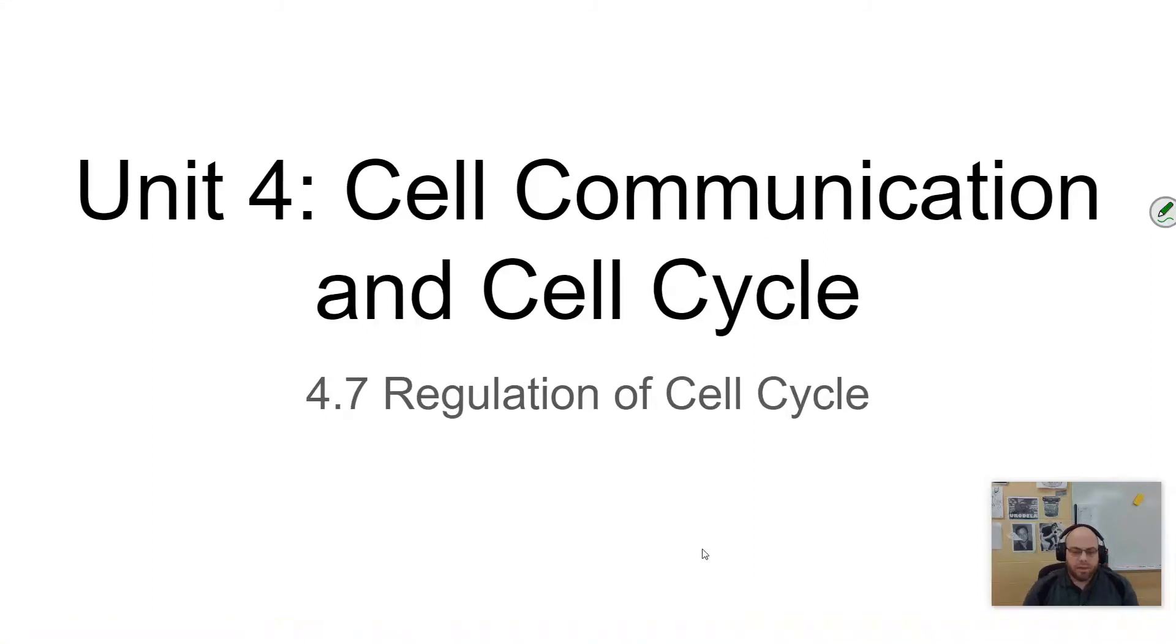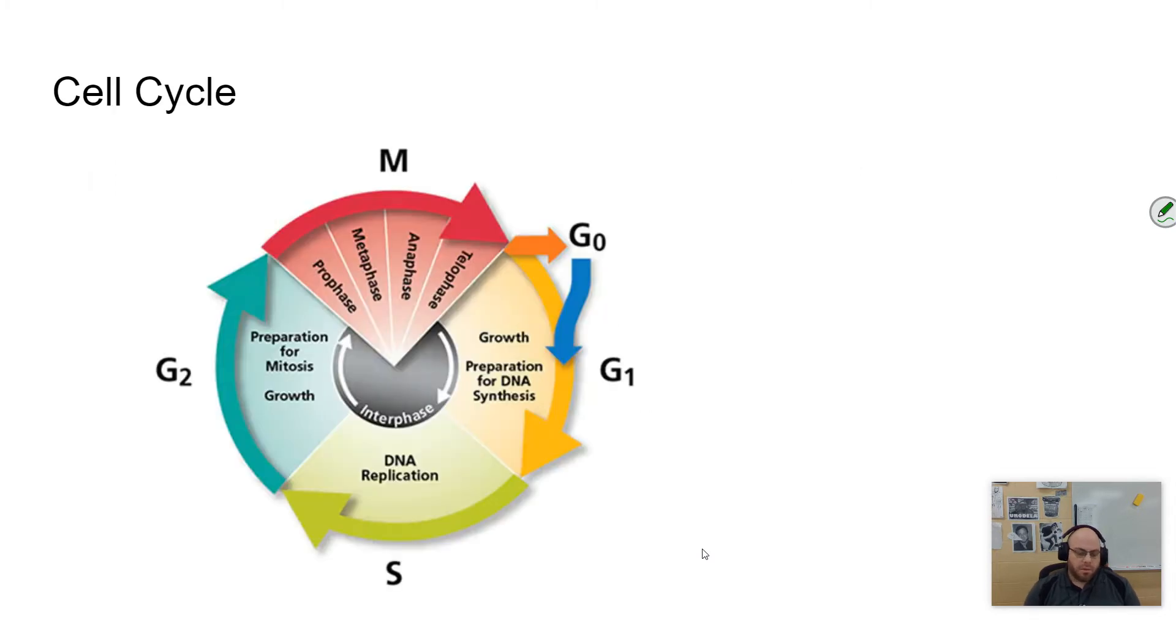In this video, we'll be looking at the regulation of the cell cycle, things that control the cell cycle to keep cells from dividing whenever they feel like it. Here's a nice picture of the cell cycle again. Remember, the cell cycle is just the normal life cycle of a cell. It ends in division where you have two identical daughter cells. It's made up of those phases you see: interphase and M-phase.